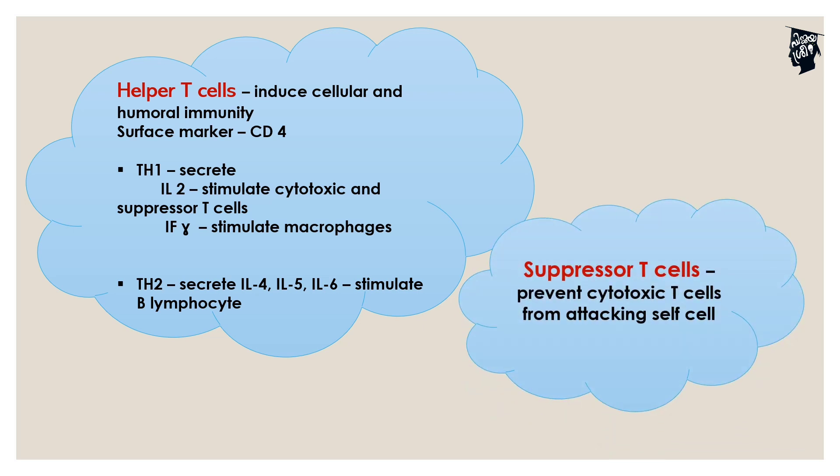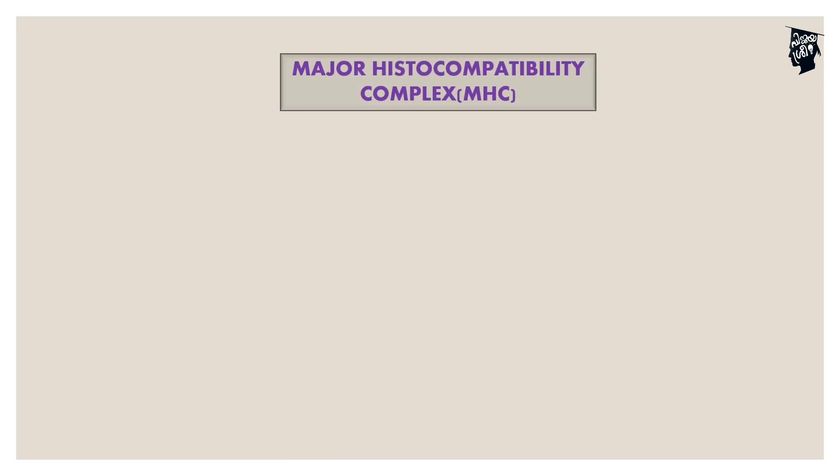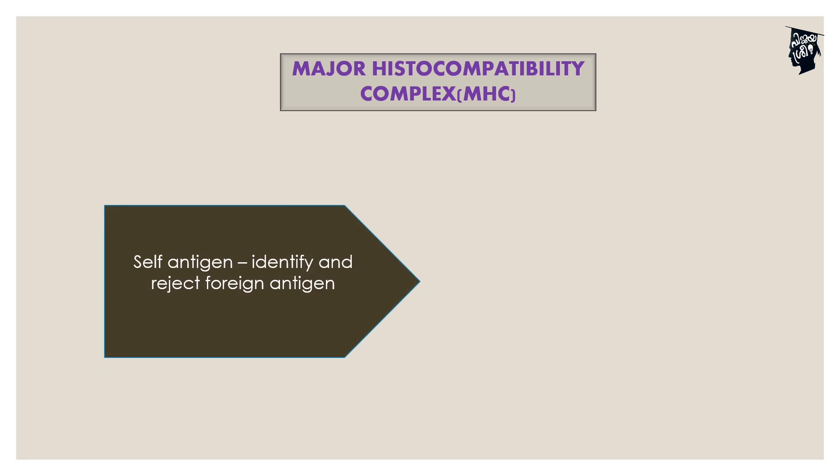Next one is suppressor T-cells. Suppressor T-cells suppress — they prevent the cytotoxic T-cells from attacking the body's own cells. In cell-mediated immunity, MHC — major histocompatibility complex — is called self-antigen, which helps identify and reject foreign antigens.